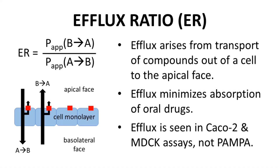With membrane permeability results, researchers often report the efflux ratio of a molecule. The efflux ratio is the ratio of B-to-A permeability to A-to-B permeability. It might be surprising that permeability can differ based on the direction of transit, but it can. Differences normally arise from transporters — like those shown in red in the diagram — found on the apical face of the cell monolayer. These efflux transporters pump a molecule out of a cell to the apical side, increasing B-to-A permeability and reducing A-to-B permeability. If efflux transporters are active, the efflux ratio will be greater than 1.